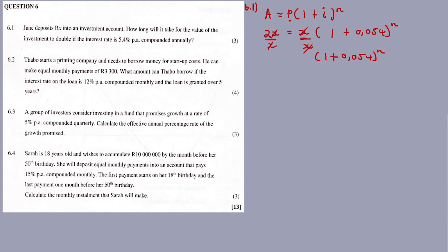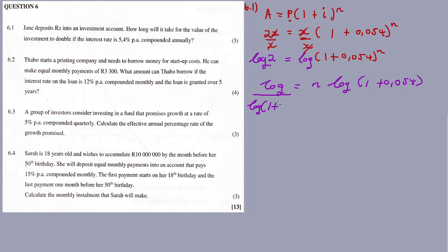Now, as we know, you can apply the log definition — or you apply log on both sides of the equation. After the application of log: log 2 = n times log(1 + 0.054). Divide both sides by log(1 + 0.054). So n is equal to log 2 divided by log(1 + 0.054).